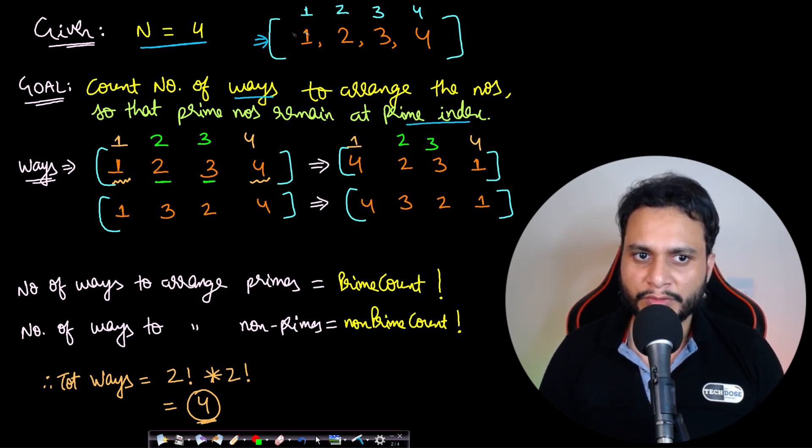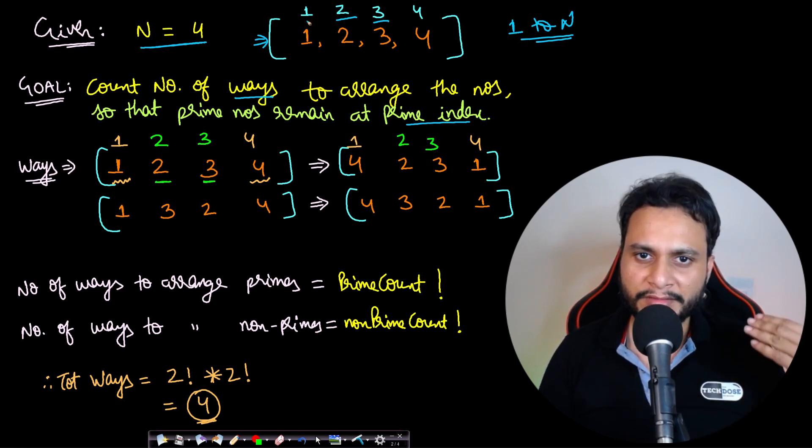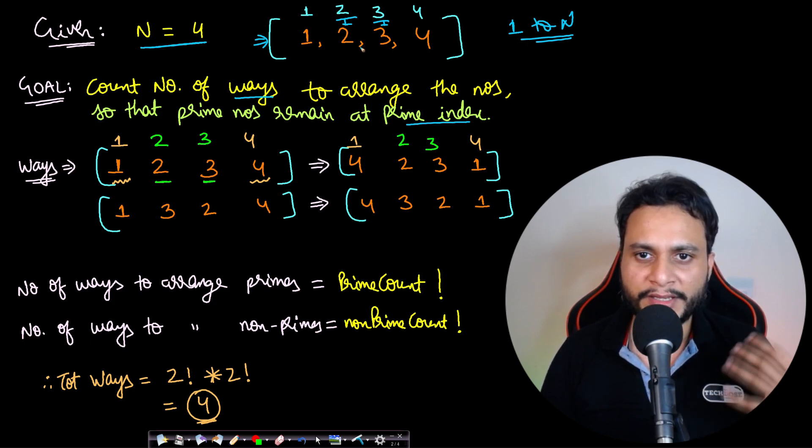Given n, we find the prime numbers from 1 to n. In this case it's 2 and 3. If you're enumerating numbers from 1 to n and the index is also 1 to n, the corresponding value and index initially will be the same. So in how many ways can you arrange the prime numbers as well as the non-prime numbers?